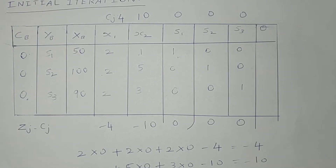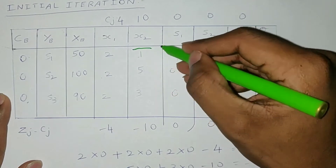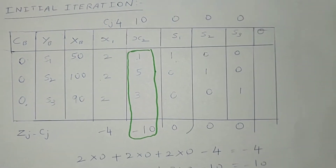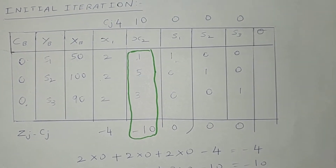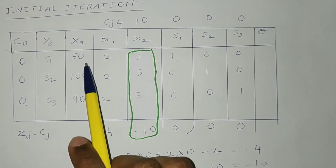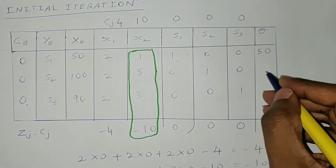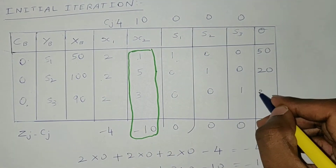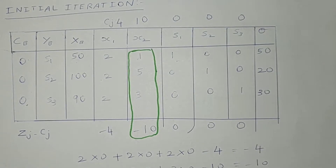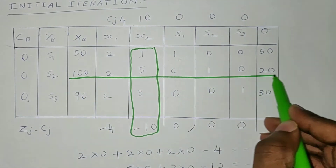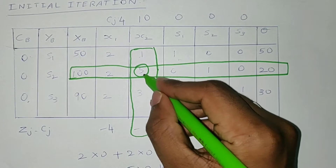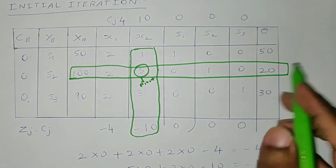Now we take the most negative element, which is minus 10, so we select that column. To find theta, we divide xb by the selected column values: 50 divided by 1 is 50, 100 divided by 5 is 20, and 90 divided by 3 is 30. The least value is 20, so we take that row. This gives us the pivot element and the pivot row.